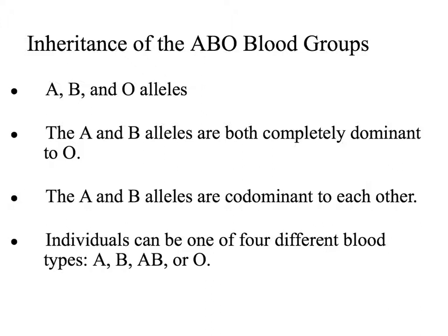Individuals can be one of four different blood types: type A, type B, type AB, or type O. These blood types are the phenotypes.